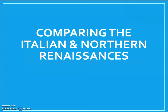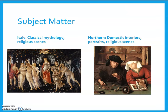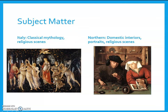You're going to see some art from Italy that seems to match some of the styles of the North and vice versa. In terms of subject matter, you will notice that most of the Italian Renaissance art focuses on classical mythology or religious scenes. This comes from that inspiration from classical Greece and Rome, as you can see in Botticelli's Primavera, showing a scene from Roman mythology.